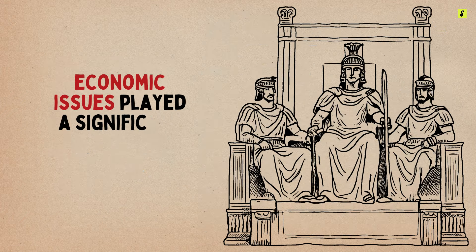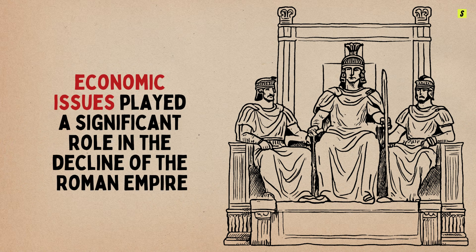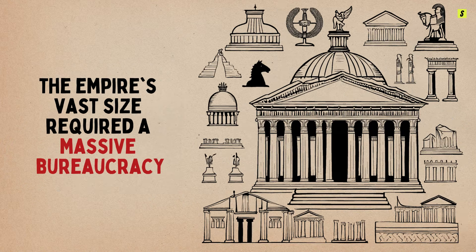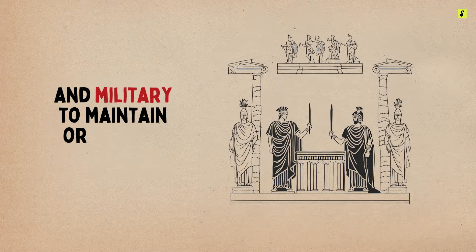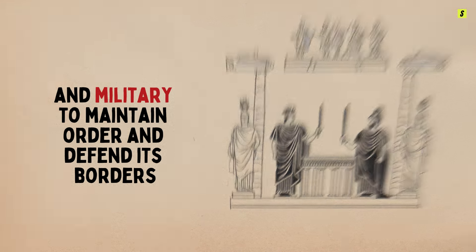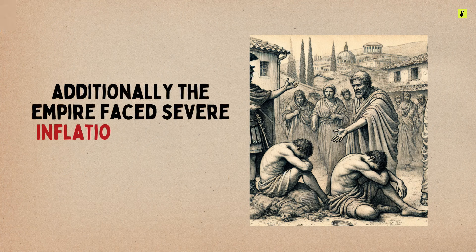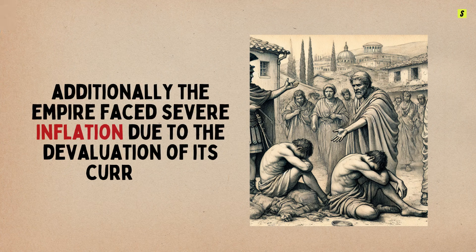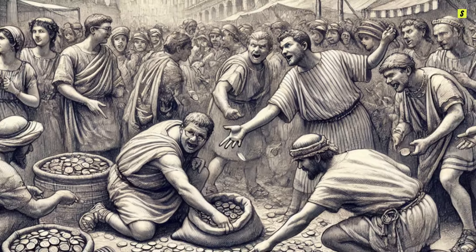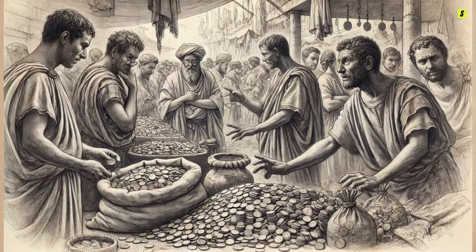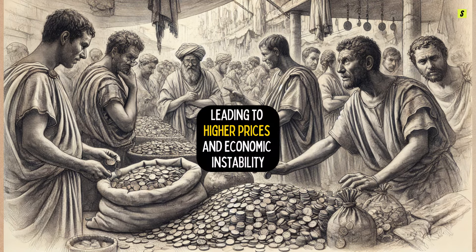Economic issues played a significant role in the decline of the Roman Empire. The empire's vast size required a massive bureaucracy and military to maintain order and defend its borders. This led to high taxation, which burdened the populace and stifled economic growth. Additionally, the empire faced severe inflation due to the devaluation of its currency. As emperors minted more coins to pay for expenses, the value of money decreased, leading to higher prices and economic instability.